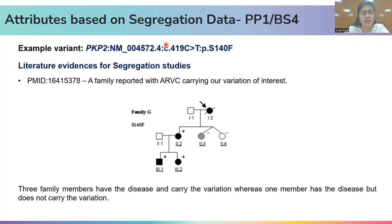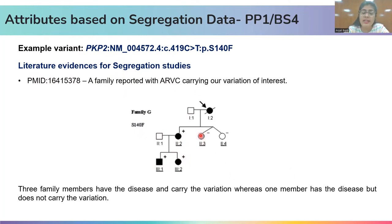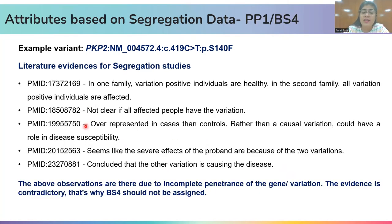Next are attributes based on segregation data. Here I have taken the example of a PKP2 variant given as an exercise. Literature evidence for segregation studies provides a PMID in which a family reported with ARVC is carrying the variation of interest. In this pedigree, three family members have the disease and carry the variation, whereas one family member has the disease but does not carry the variation. On seeing this, one might observe the lack of segregation and jump to assign the BS4 attribute. However, other literature evidences tell different stories — there are contradictory evidences for the same variation. Since BS4 is a strong attribute for benign interpretation, it could change the final ACMG-AMP impact. Therefore, when the evidences are contradictory, one should ideally not assign it.